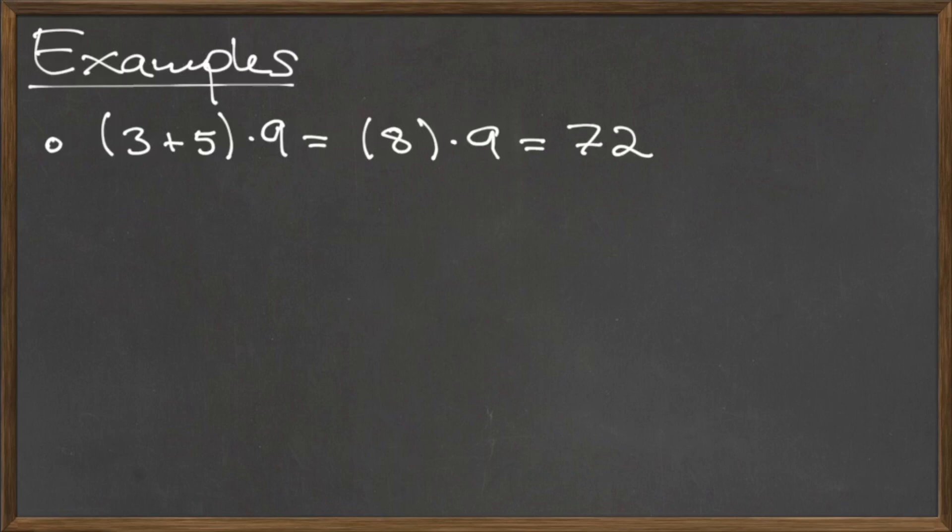Similarly, to compute 8 minus (2 times 3), we first compute 2 times 3 as they appear inside the parentheses. That gives us 6, and then we compute 8 minus 6 to get 2.